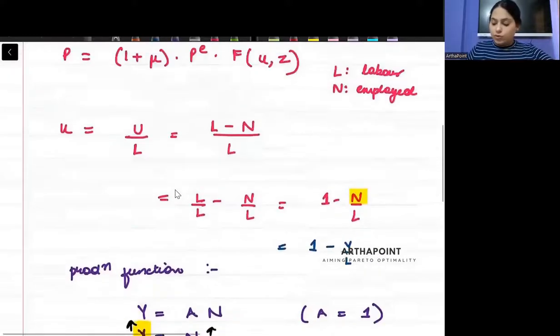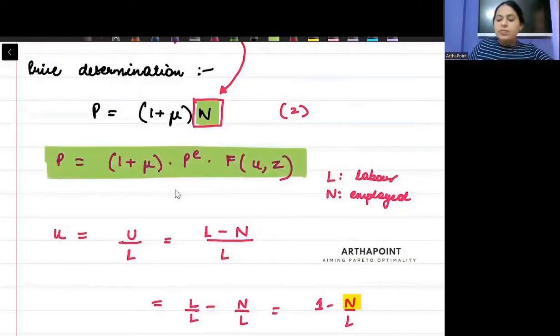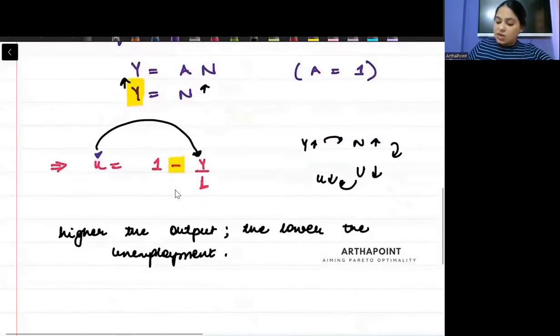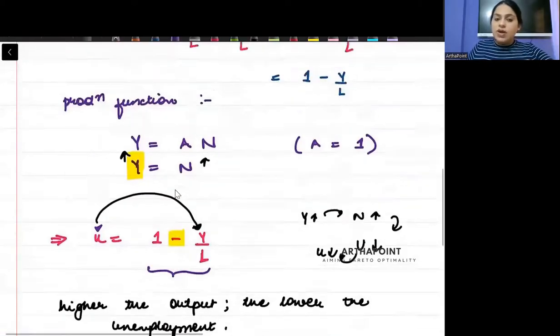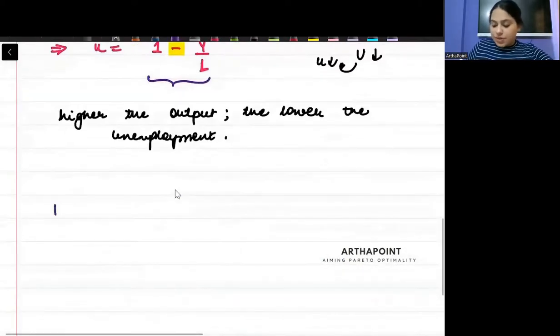Now, what do I want to do? So I want to go back to this relationship. And from this relationship, I have just now derived u in terms of y. u is equal to 1 minus y by L. I just want to put that there. So what will happen? Well, p is equal to pe times 1 plus mu times f.